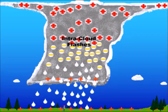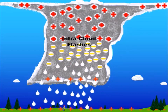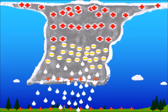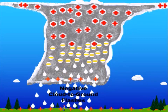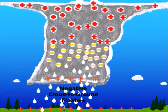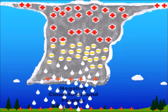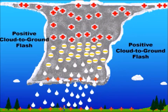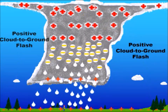In-cloud lightning can occur between oppositely charged areas of the cloud, while cloud-to-ground lightning can occur between either the negatively charged area of the cloud and the ground, or the positively charged area of the cloud and the ground.